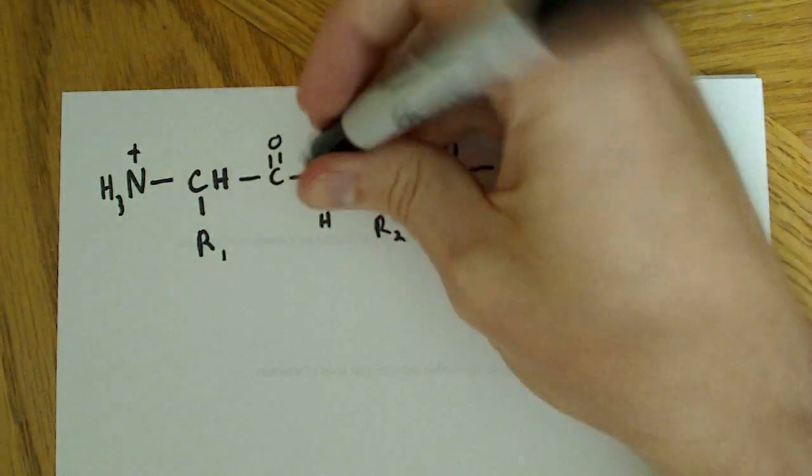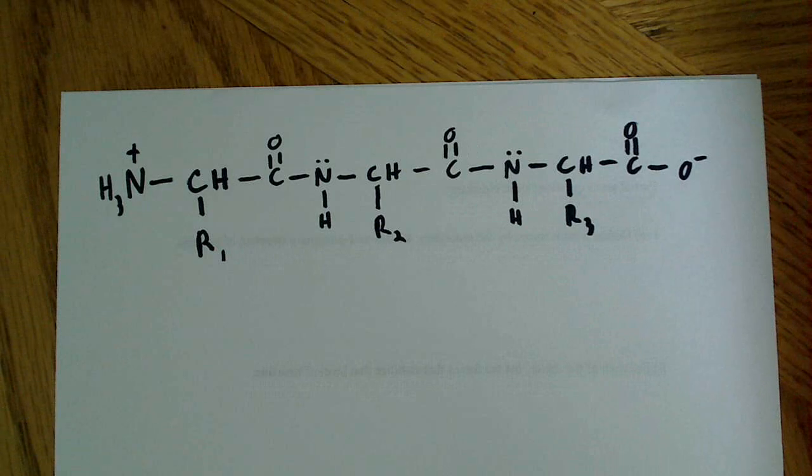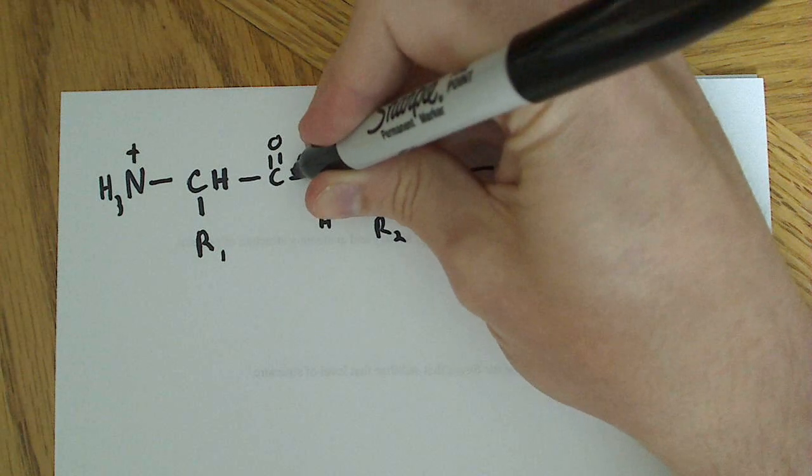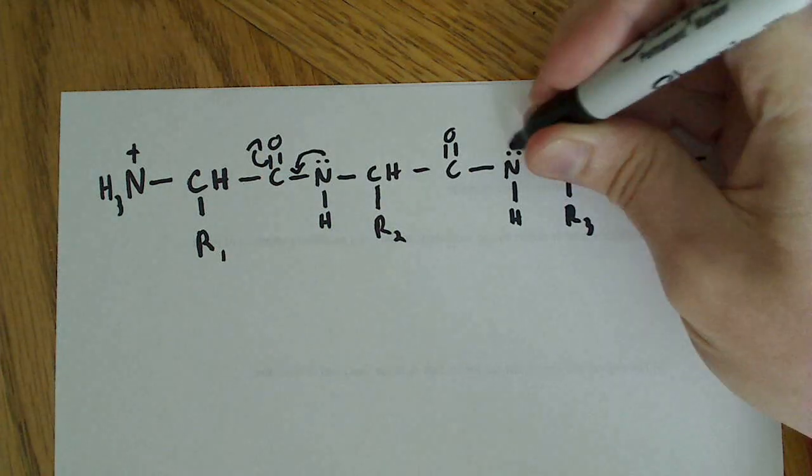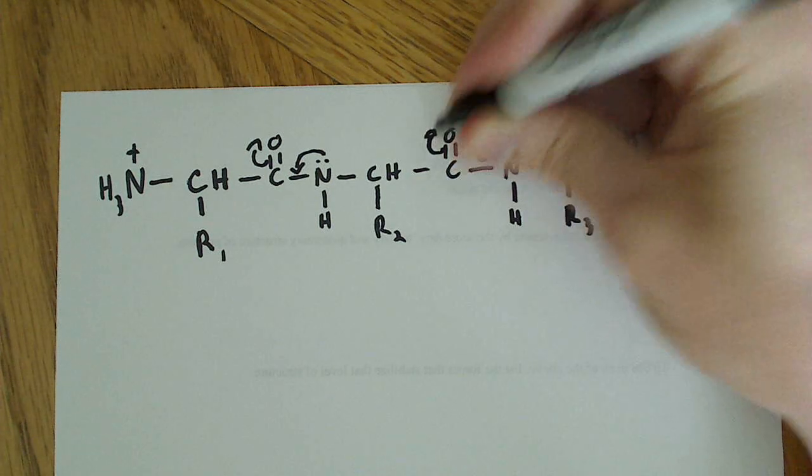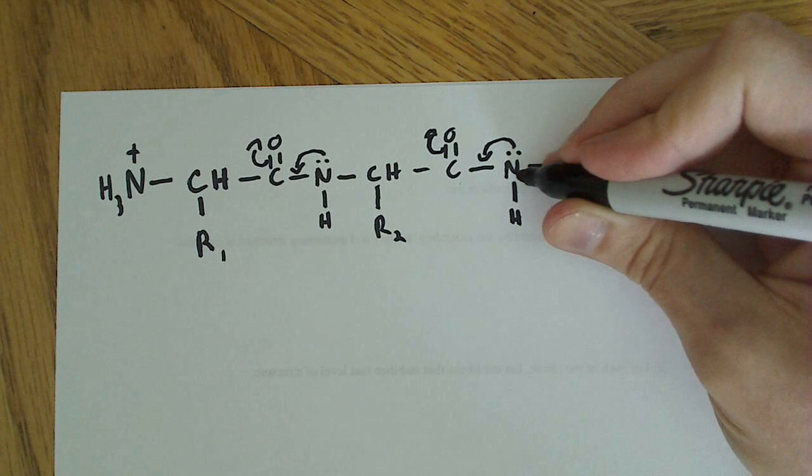And what I want us to recall is that there's a lone pair on this nitrogen, and that lone pair can actually form a resonance structure in which there's a partial double bond character between this carbon, this carbon here, and this nitrogen.